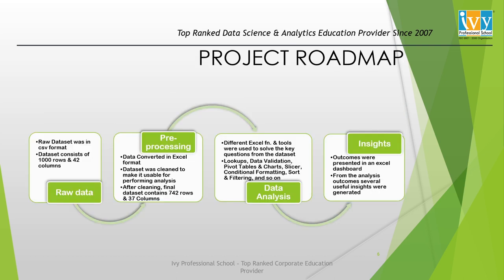Moving to the next slide which shows the project roadmap. For any data analysis project, from collection of raw data to generating insight, it is necessary to follow certain steps. The raw dataset was in CSV format with 1000 records and 42 fields. It was necessary to first convert the data to Excel format, then clean and process the data by removing blank and duplicate rows and performing several simplifications. The final dataset consists of 37 fields and 742 records. I have used different Excel functions and tools such as lookup and aggregate functions, pivot tables and charts, data validation, conditional formatting, sorting and filtering, and finally created a dashboard to present the overall outcome.